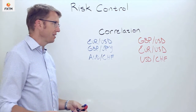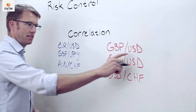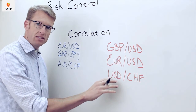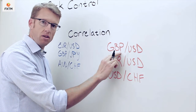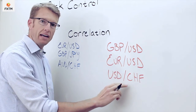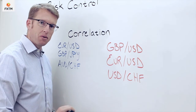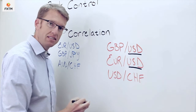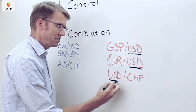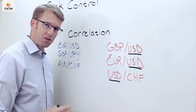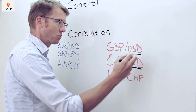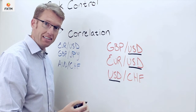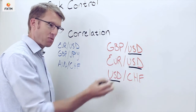This problem is more pronounced when we have a situation like this. Imagine that a trader has three trades in their portfolio — one on the pound, another on the euro, and they're also trading the swissy. In this case, the dollar is on the quote side of the first two pairs and on the base side of the third pair.